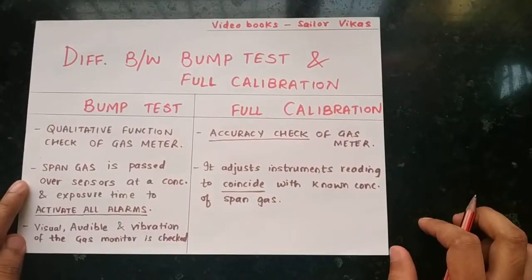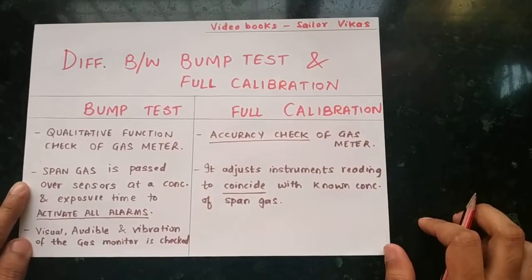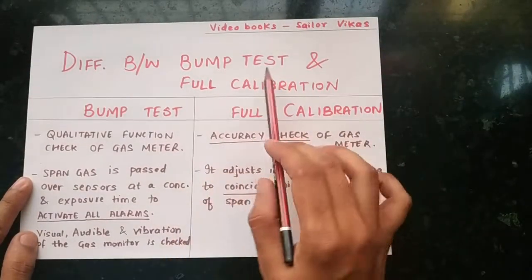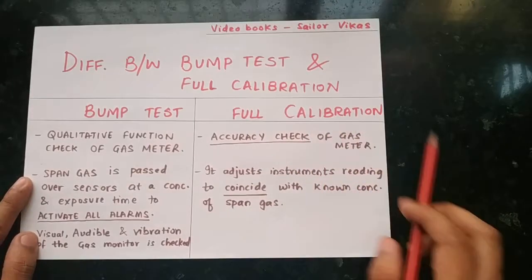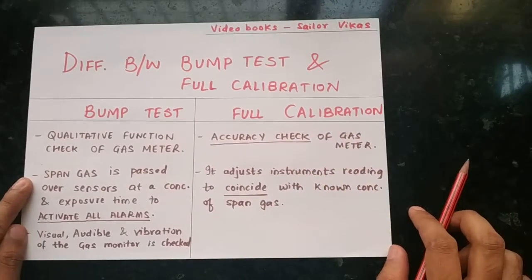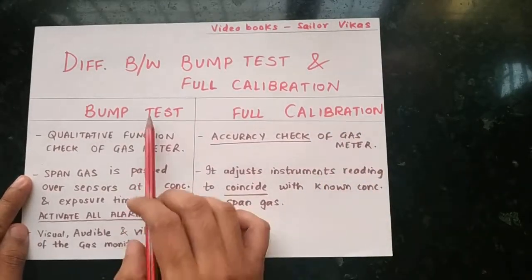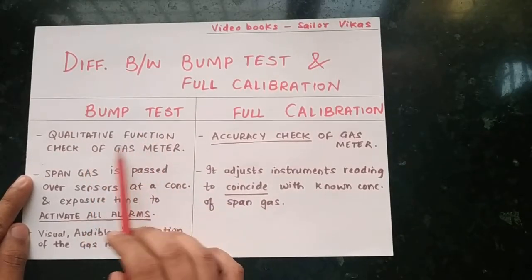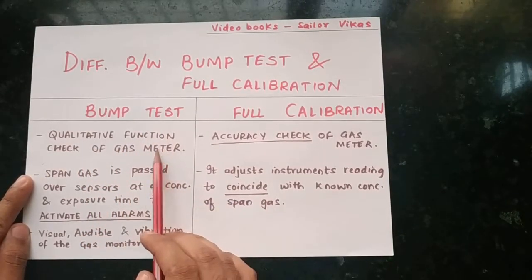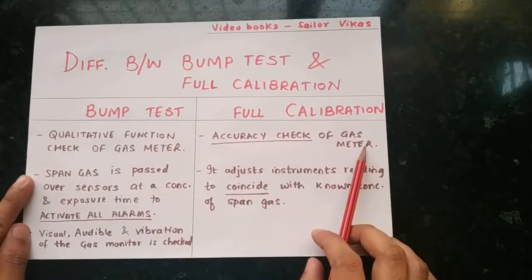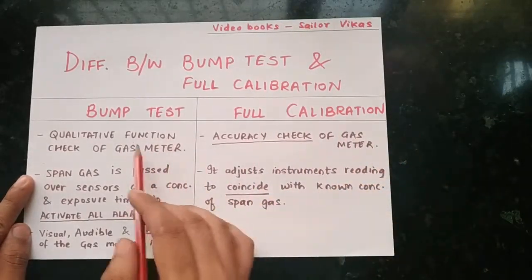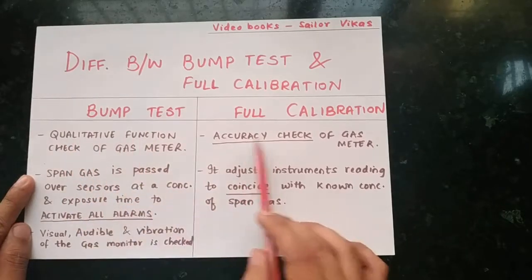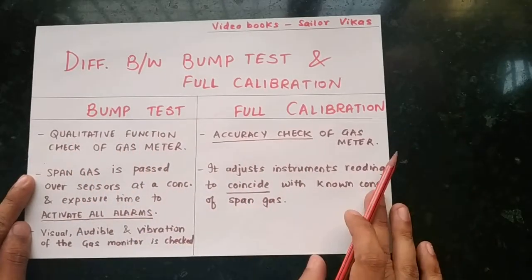This is a question recently asked in orals: the difference between bump test and full calibration in gas meters. In bump test, it is a qualitative function check of the gas meter, and full calibration is nothing but an accuracy check. So qualitative function check versus accuracy check — this is very easy to remember.